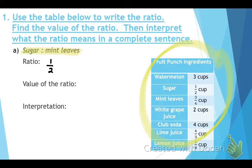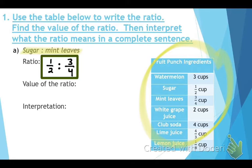We're comparing one-half to three-fourths of a cup of mint leaves. That's how we write the ratio. Remember, there are two other ways — as a fraction or with the word 'to' in the middle.